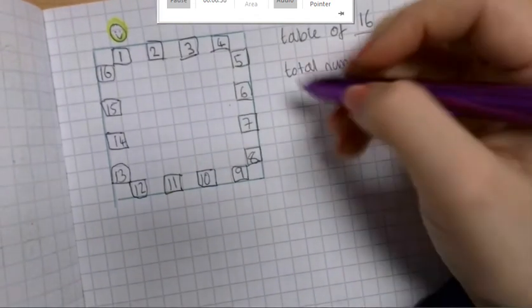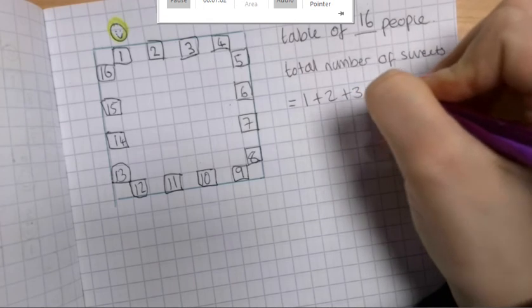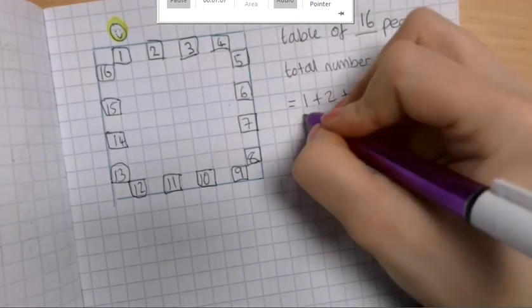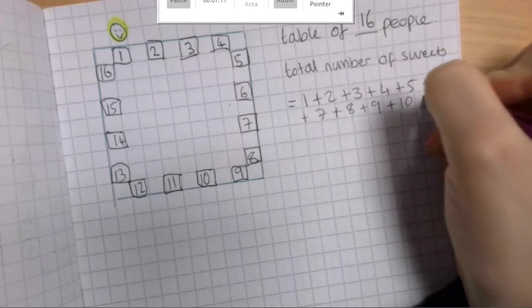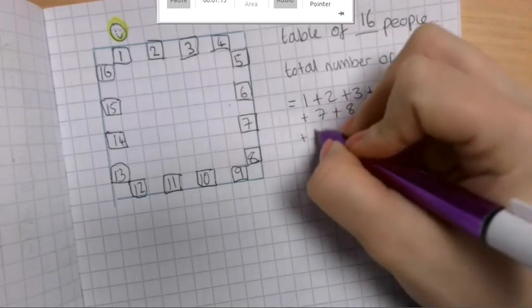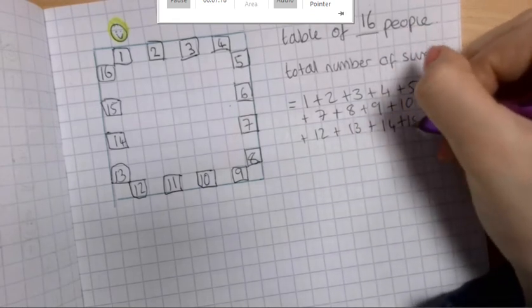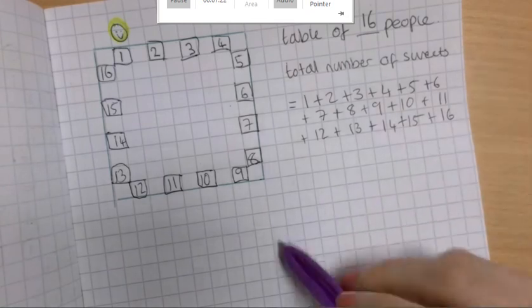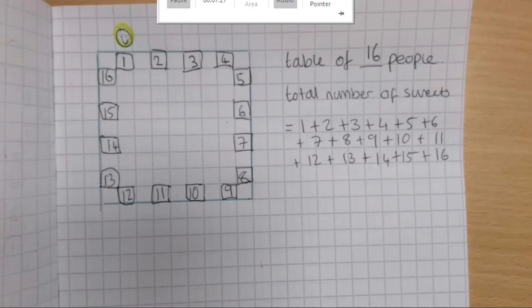And then the total number of sweets. So we need to do 1 plus 2 plus 3 plus 4 plus 5 plus 6 plus 7 plus 8 plus 9 plus 10 plus 11 plus 12 plus 13 plus 14 plus 15 plus 16. You need to now work that out. So we're adding all the numbers up between 1 and 16.